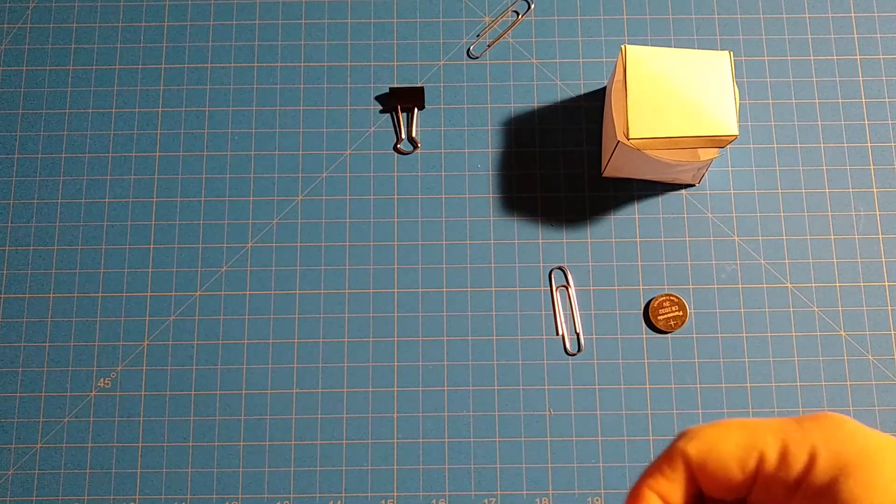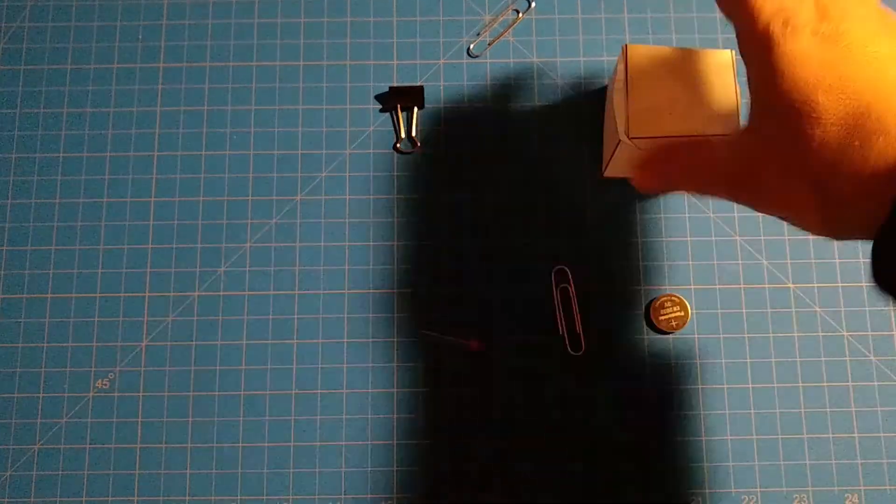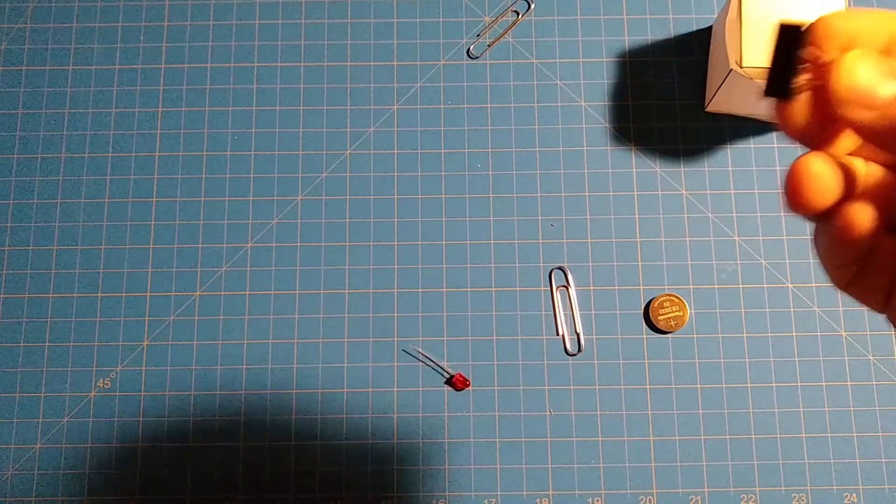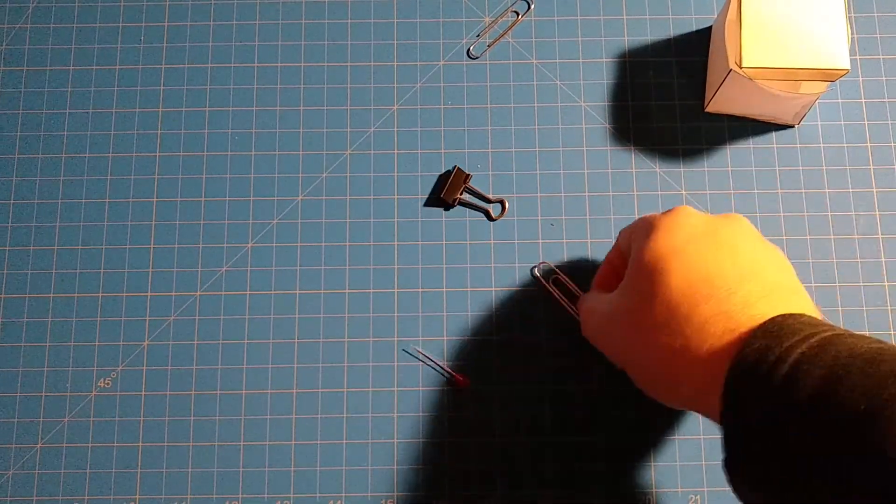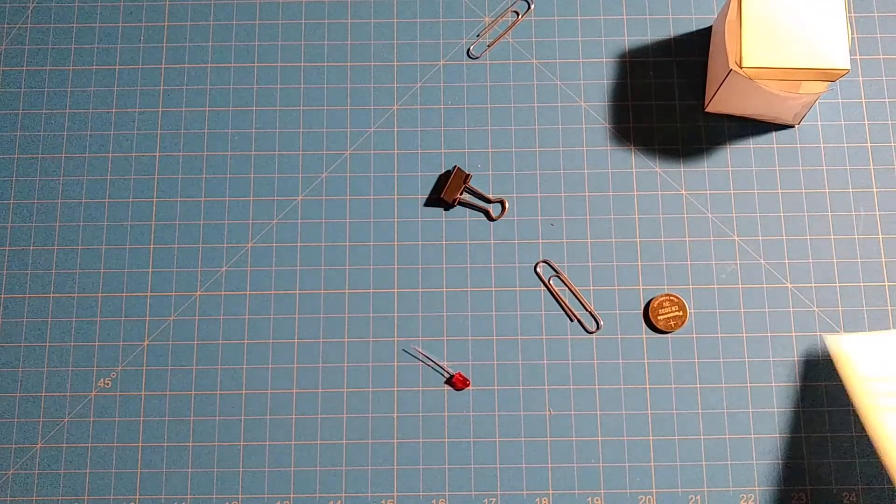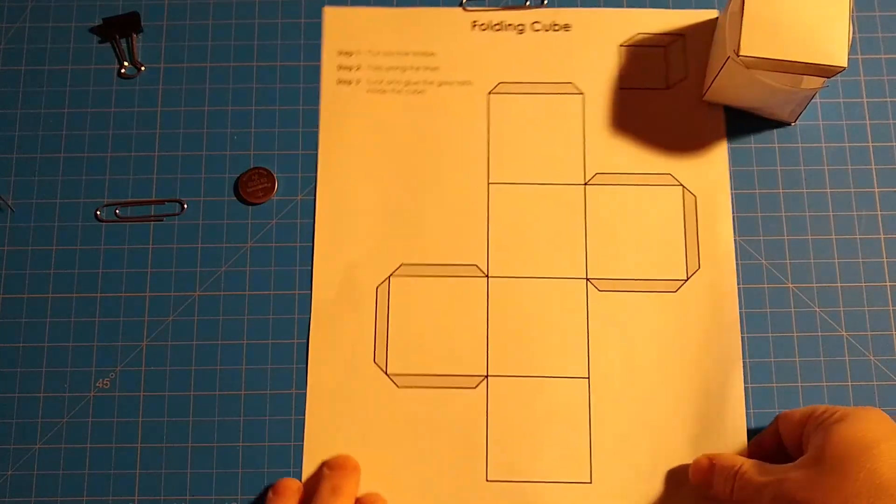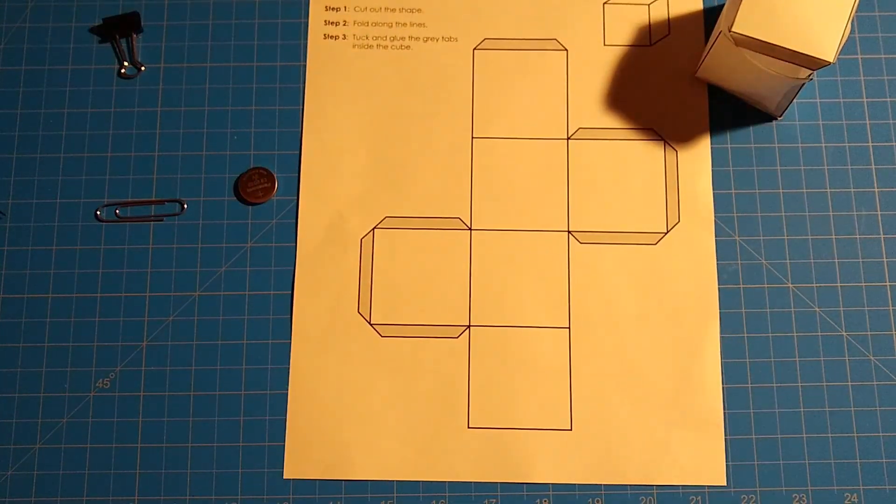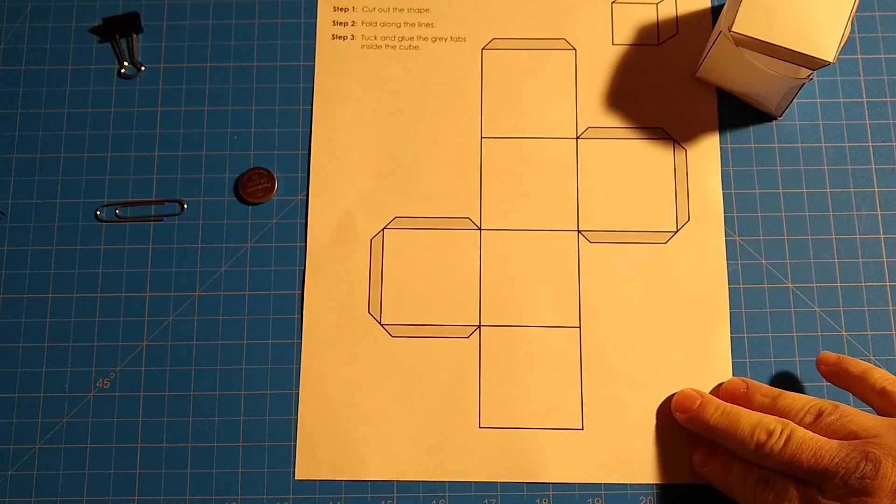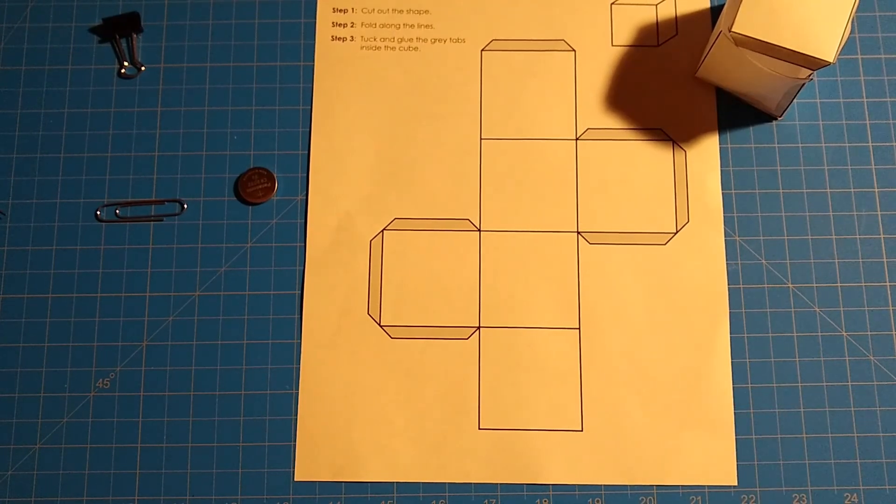You'll be getting some binder clips and some paper clips, and then you'll get this little template here that'll show you how to fold your cube. You can obviously use any shape that you want, you can use your own piece of paper that you have or the one provided.